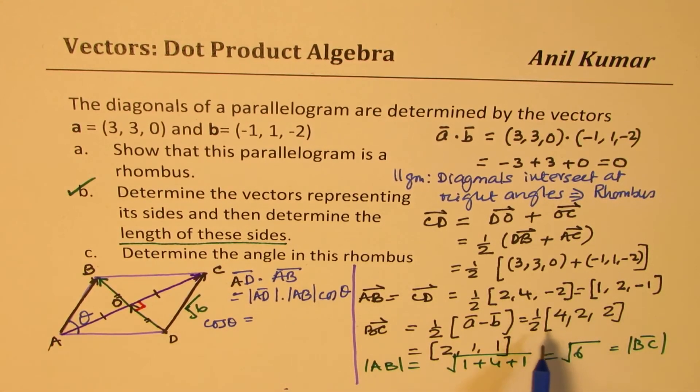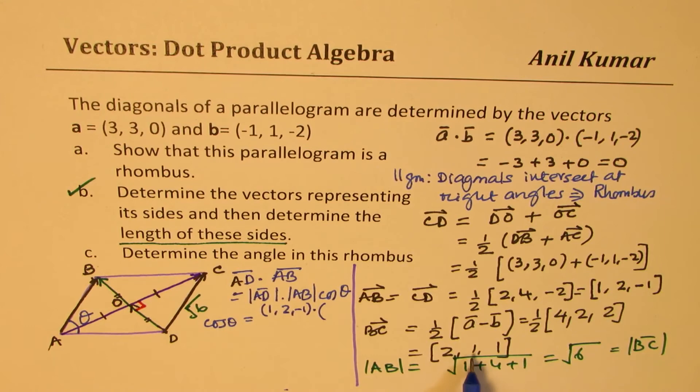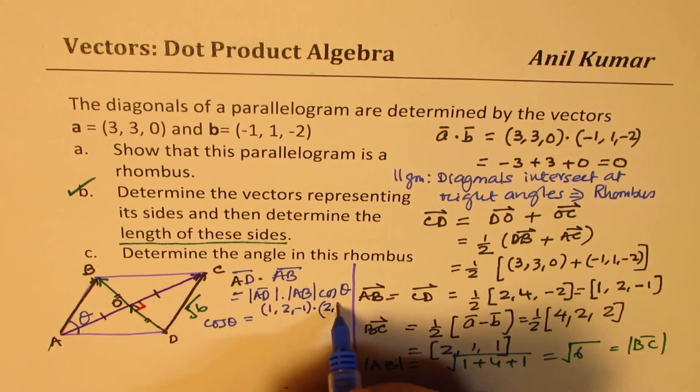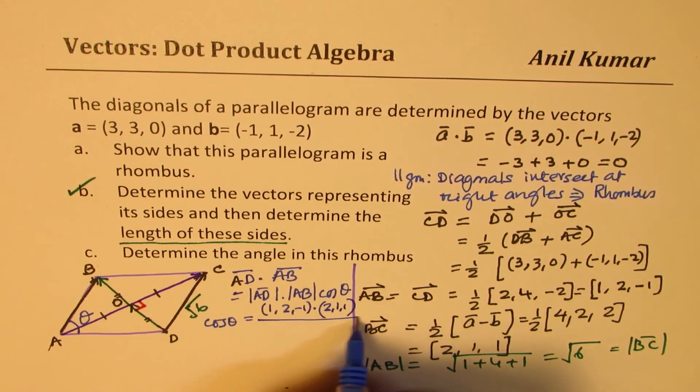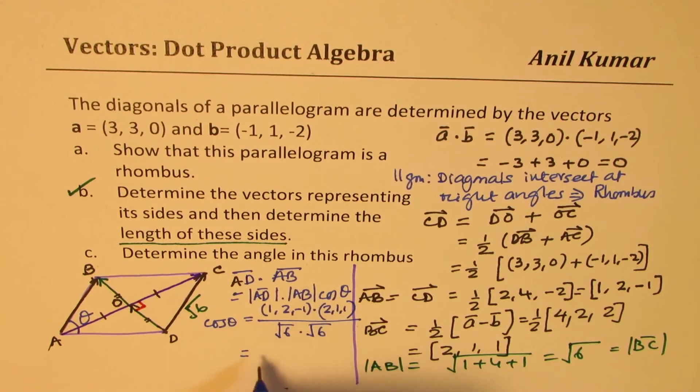It is equal to magnitude of AD times magnitude of AB times cos of theta. So taking this angle as theta. So cos theta is equal to their dot product, which I'll write down as 1, 2, minus 1, dot. Here it is 2, 1, 1. Divided by the magnitudes of square root 6, we already calculated. So we'll put that straight. Now what is this? 1 times 2 is 2. 2 times 1 is 2. Minus 1 times 1 is minus 1 over 6.